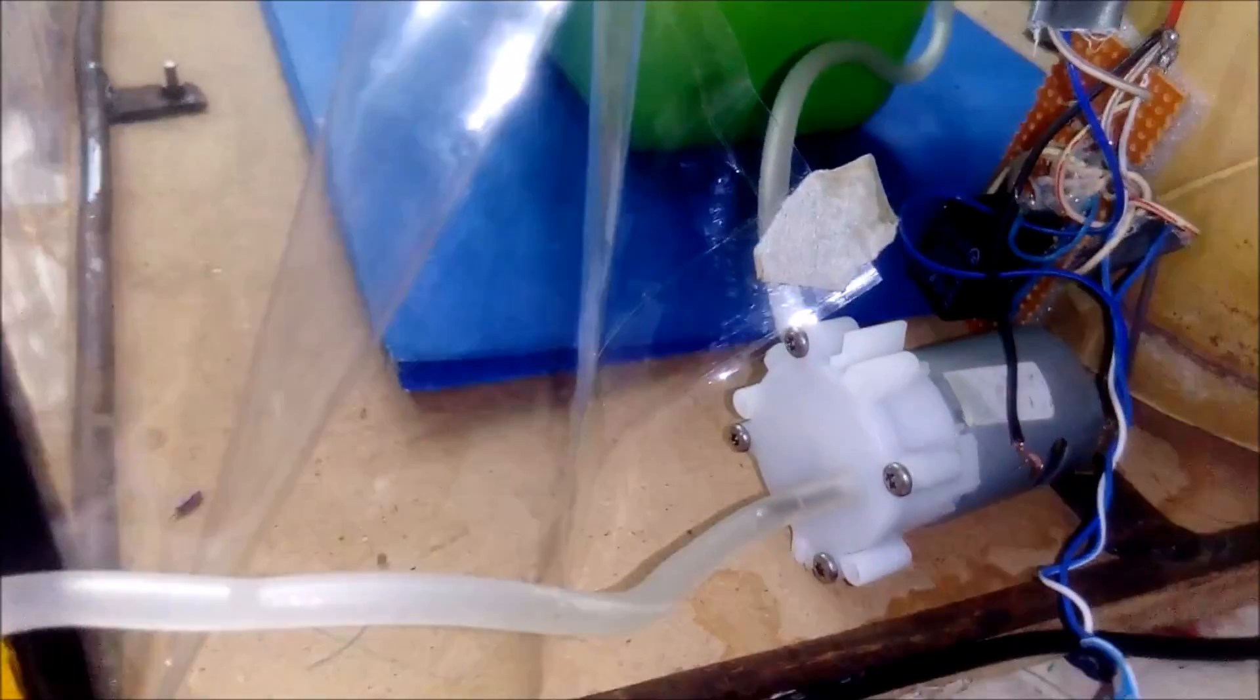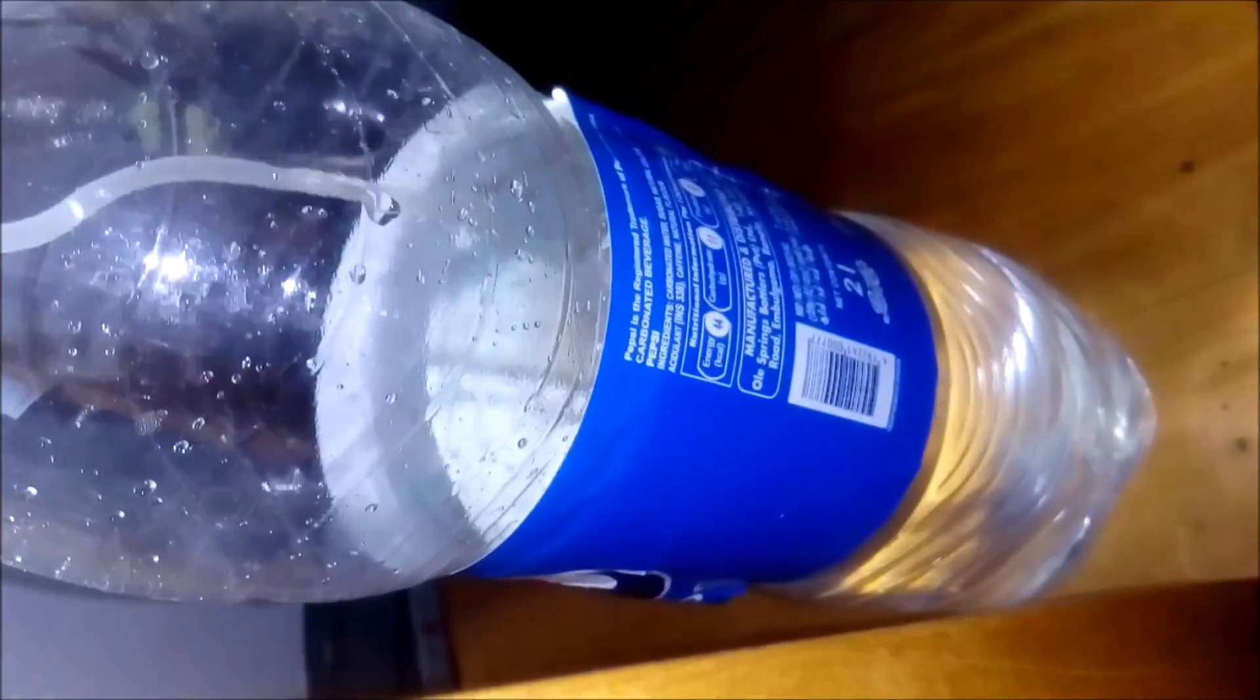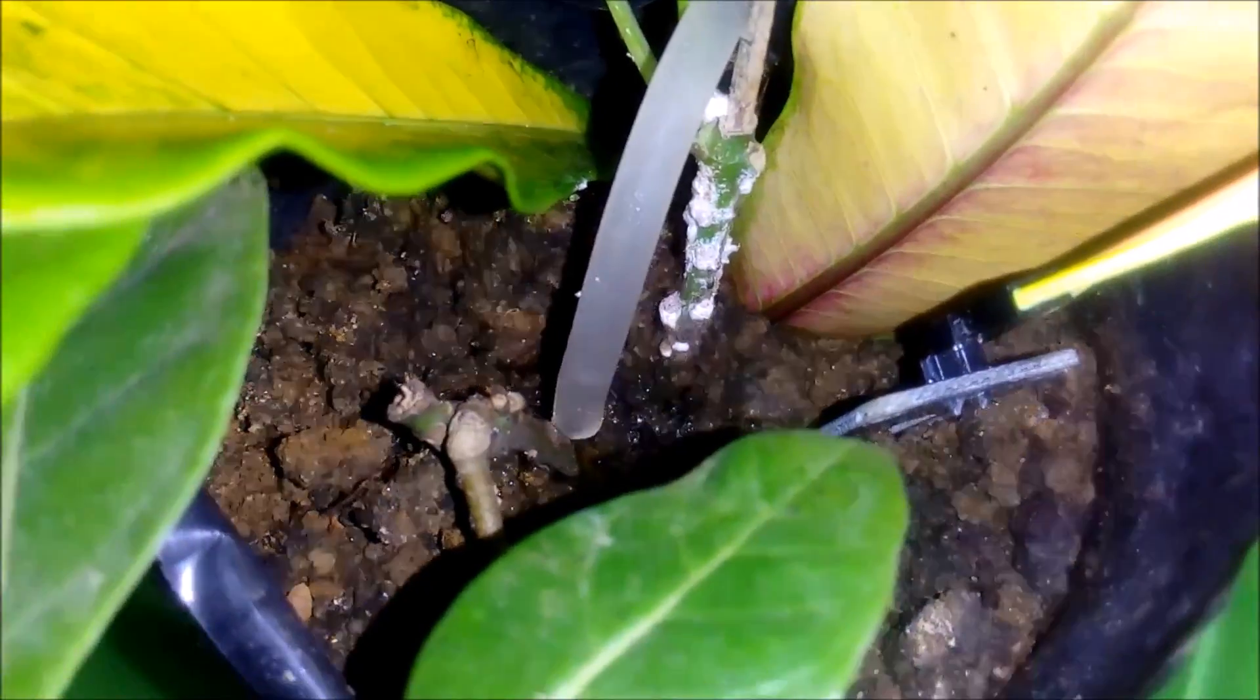Let us move to the controlling part. Here is the mini water pump we are using. It can drain water from the bottle to the plant according to the humidity and temperature data. And the fan is also controlled according to temperature of the greenhouse.